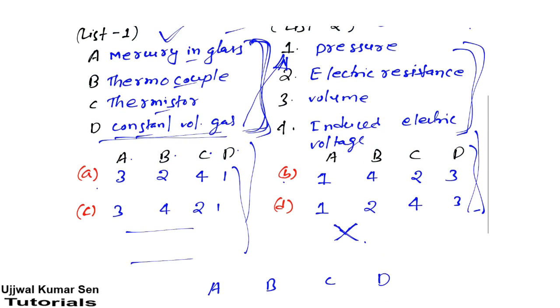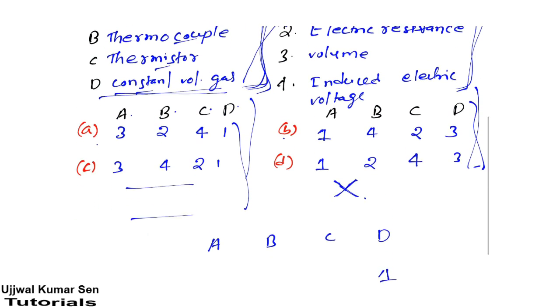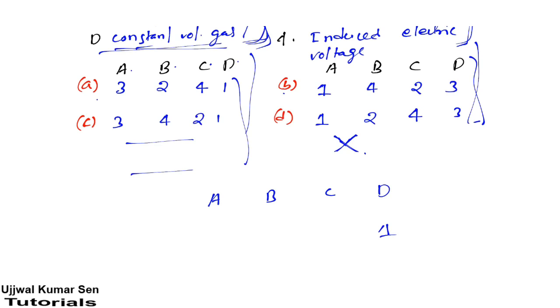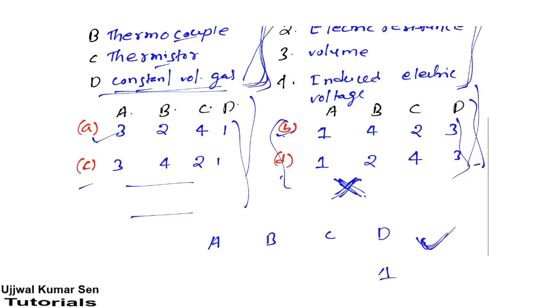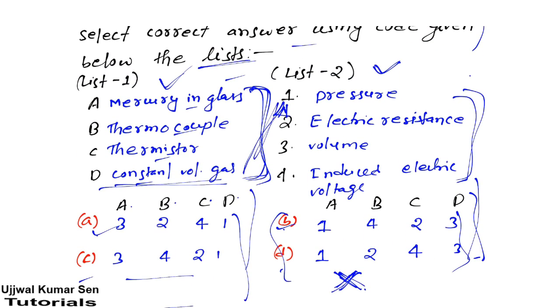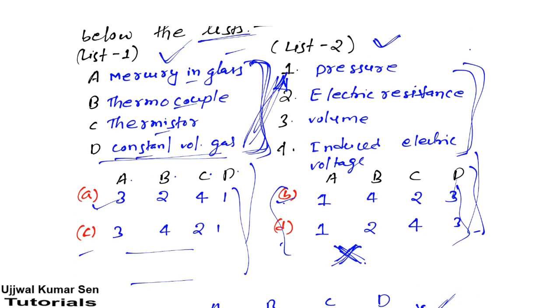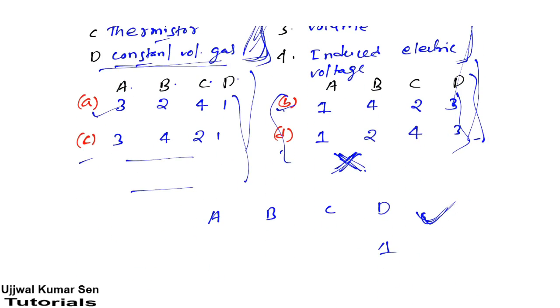After doing this, we need to see all four options - A, B, C, and D. You can see these two options are not matching with our answer, and I am very confident about this. Now, you have to see both the options - options (a) and (c) both have D-4. You don't need to see option (b) anymore.